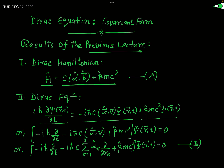This equation can be rearranged by moving all terms to one side. The result is: [−iℏ ∂/∂t − iℏc α·∇ + βmc²] ψ(r,t) = 0. Equivalently, this is written as: −iℏ ∂/∂t − iℏc Σ(k=1 to 3) αk ∂/∂xk + βmc² acting on ψ(r,t) = 0, where the operator α·∇ is written as the summation over k from 1 to 3 of αk ∂/∂xk.